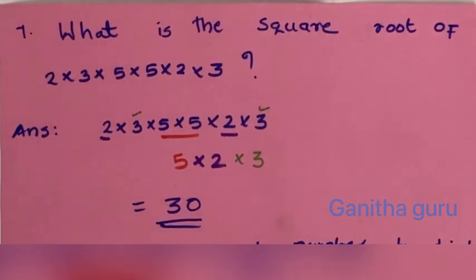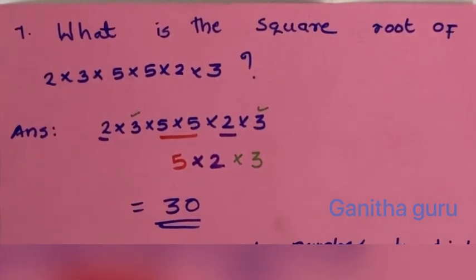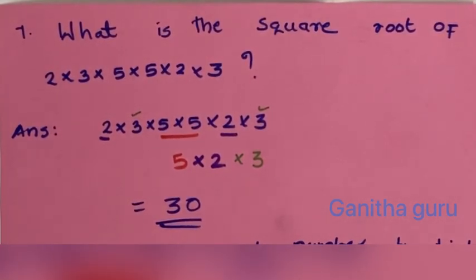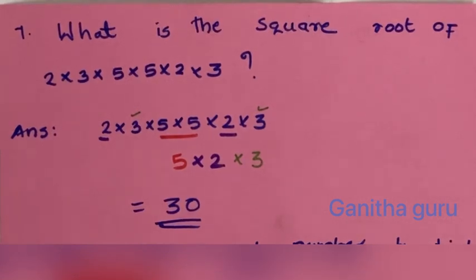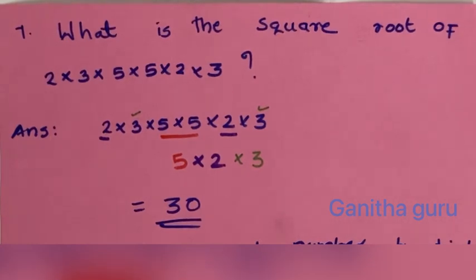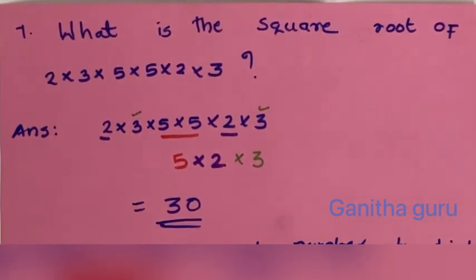Seventh question: what is the square root of 2 into 3 into 5 into 5 into 2 into 3? Pair up the factors: 2 with 2, 5 with 5, 3 with 3. So 5 into 2 is 10, into 3 is 30. The answer is 30.